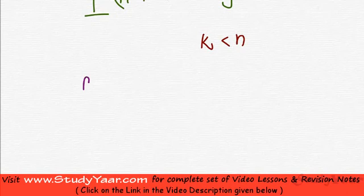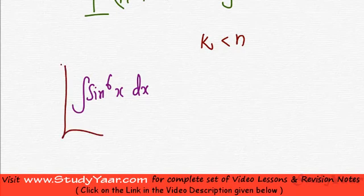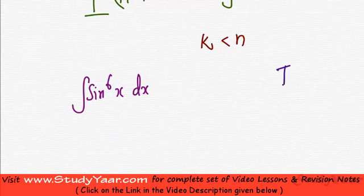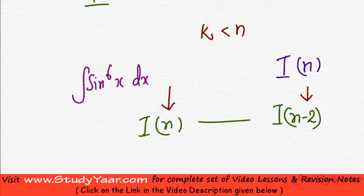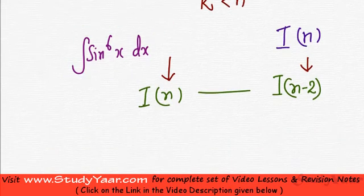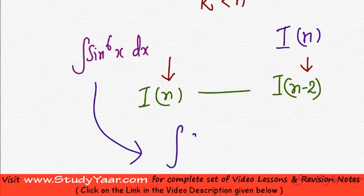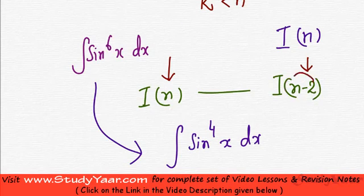Let's suppose that you want to integrate sin raised to power 6 x dx. You do not have any standard formula that would allow you to integrate this expression. So I am going to assume this is your I of n, and you know a relationship between I of n and I of n minus 2. If you know how these two are related, then you can reduce this into the integration of sin raised to power 4 x dx. For n equal to 6, n minus 2 would be 4.